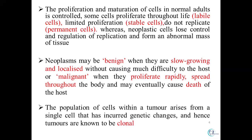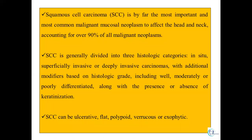Tumors usually arise from a single cell population and are known as clonal; however, some cancers may be polyclonal. The most common malignant neoplasm of the head and neck is squamous cell carcinoma, comprising about 90%. The most common malignant neoplasm of salivary gland origin is mucoepidermoid carcinoma — it is important to distinguish these in MCQs.